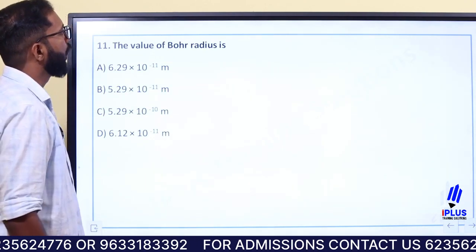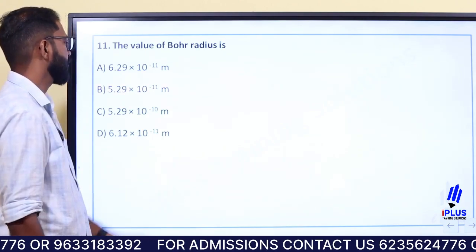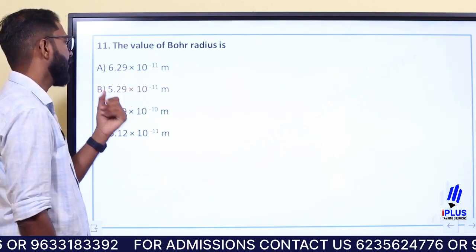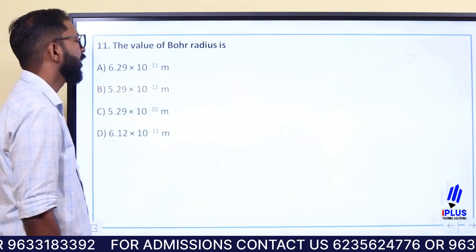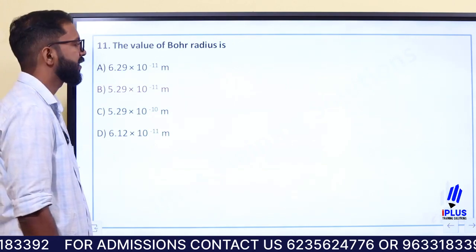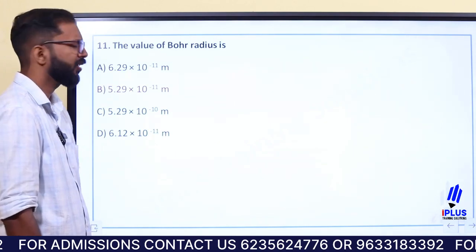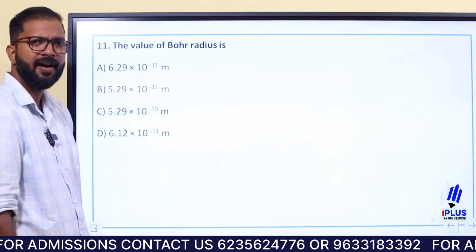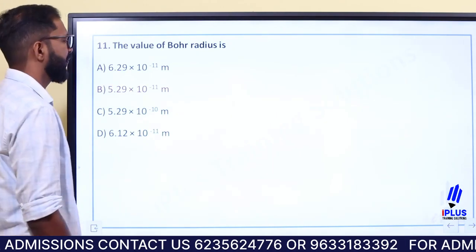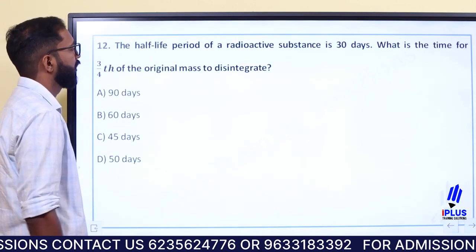The value of Bohr radius is 5.29 times 10 raised to minus 11 meter.